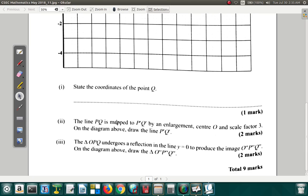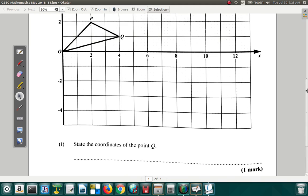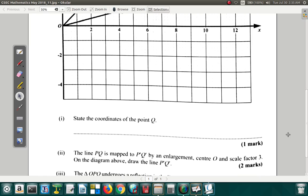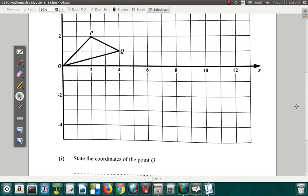The line PQ is mapped onto P prime Q prime by an enlargement center O scale factor 3. The center is O. The scale factor is 3. On the diagram above, draw the line P prime Q prime. So, PQ is mapped by an enlargement center O scale factor 3.